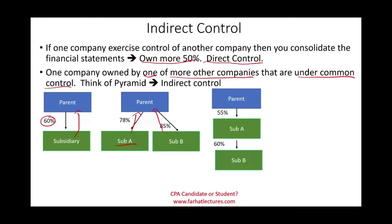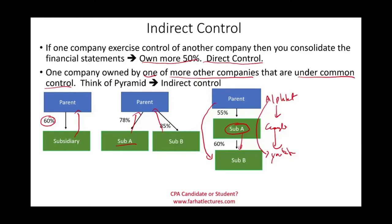The parent company controls A, and since they control A, they can tell A what to do. And A can tell B what to do because A controls 60% of B. So in reality, the parent controls B indirectly — they don't own any shares in B directly, but they own shares in A, which controls B. In the real world, think of Alphabet, which controls Google, which controls YouTube. So Alphabet controls YouTube through Google. This is a grandfather, son, grandson relationship.